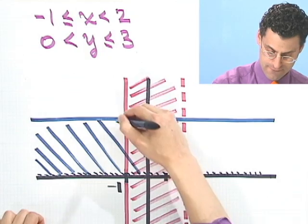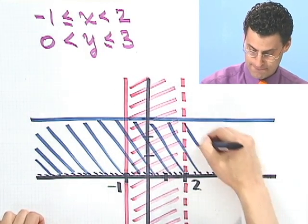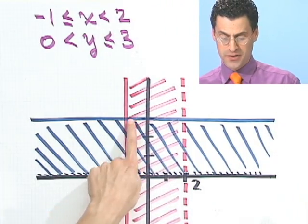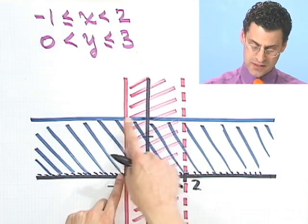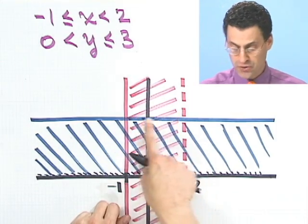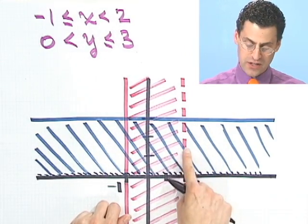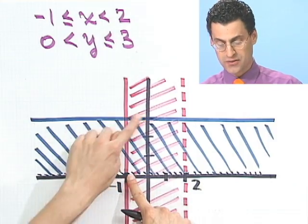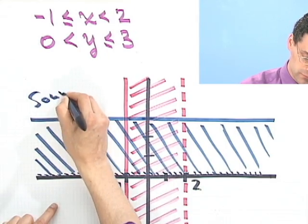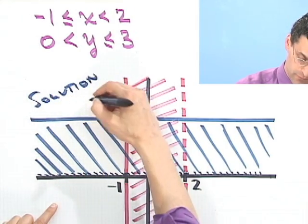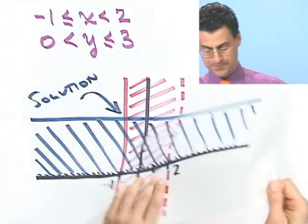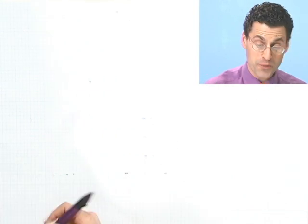The solution set is where both shaded regions overlap. It's this little rectangular region where I can include the solid edges but I don't include the dotted edges. You can write 'solution' and point right into this overlap region. That's the solution — where they overlap. Let's try another one; I think they're fun, hope you do too.